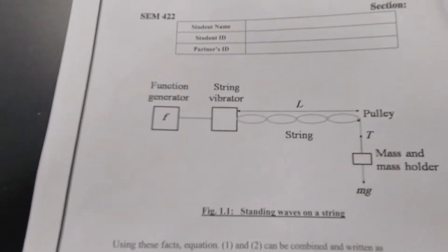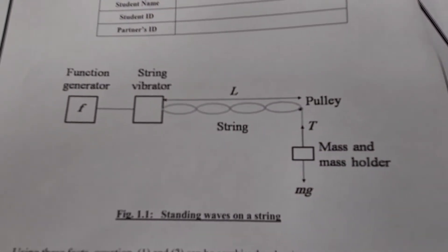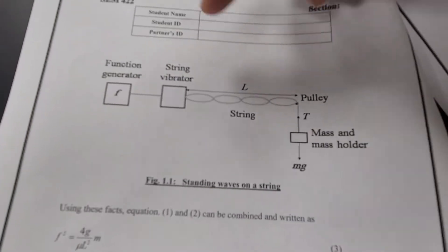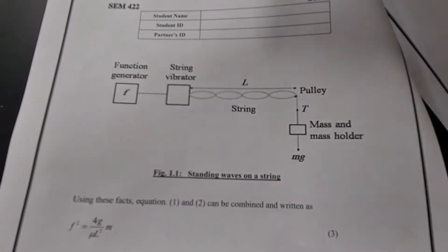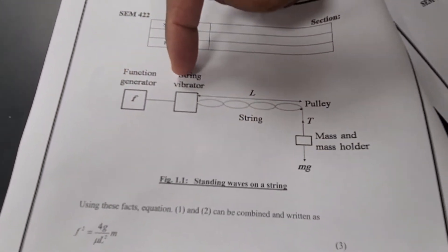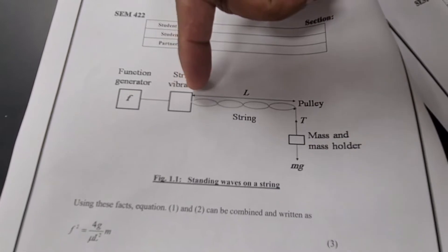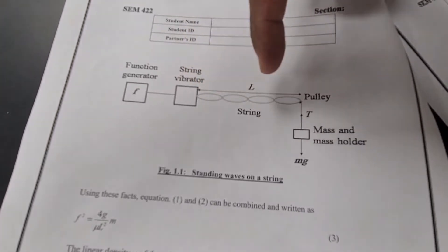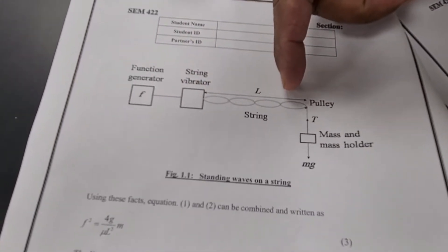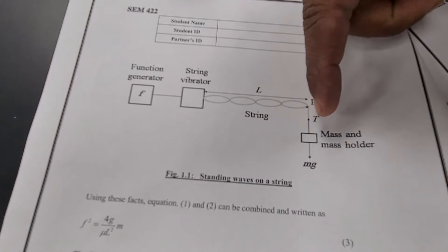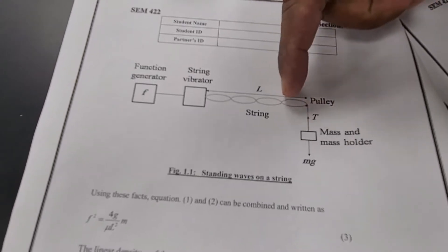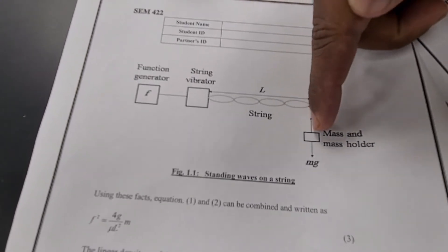The schematic diagram is this one. We are going to use some important components: the function generator, string, and vibrator. We are going to take the string of length L — generally it should be 1 meter. And then we have to apply some tension to the string by applying some mass.